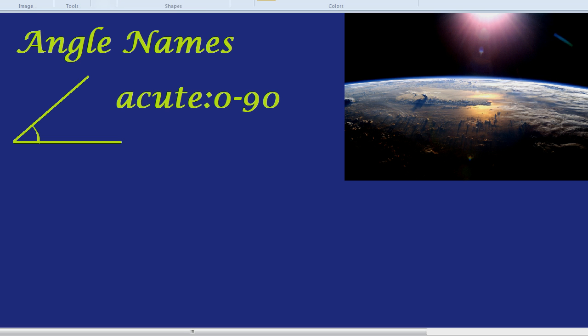But why is it called an acute angle? Well, the modern word acute actually means sharp. So you might say, I have acute pain in my belly. It means like a sharp pain.